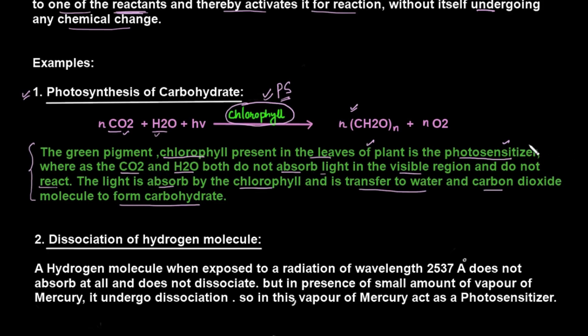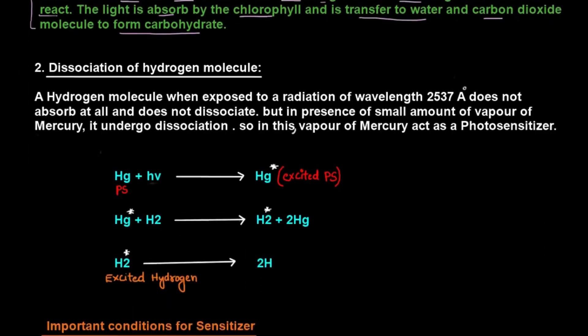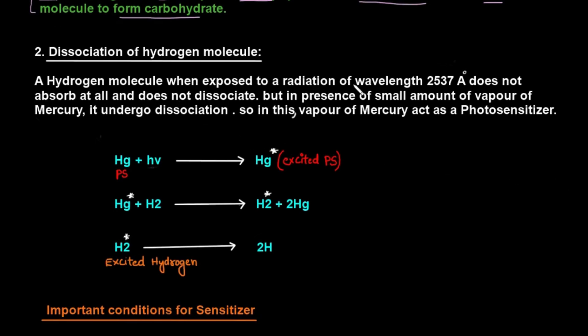Second example: in leaves, chlorophyll is already present, which absorbs light and transfers energy. The second example is the dissociation of the hydrogen molecule. Normally a hydrogen molecule when exposed to radiation of wavelength 2537 angstrom does not absorb at all and does not dissociate. But in the presence of a small amount of vapor of mercury, it undergoes dissociation.